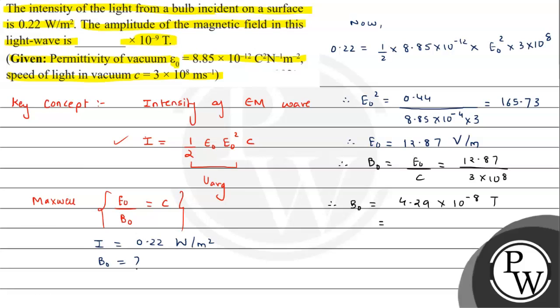Since the answer format requires 10 raised to minus 9, we shift the decimal: 42.9 × 10⁻⁹ tesla. If we approximate it to the next integer, it will be 43 × 10⁻⁹ tesla.